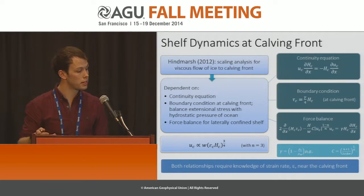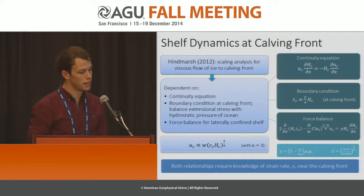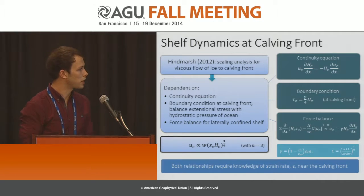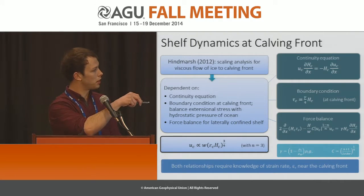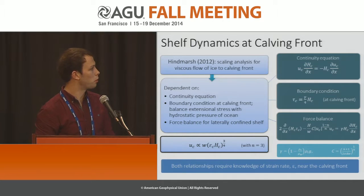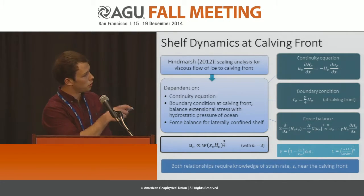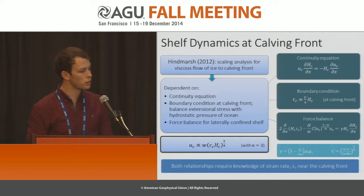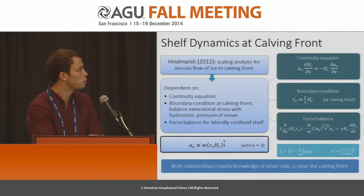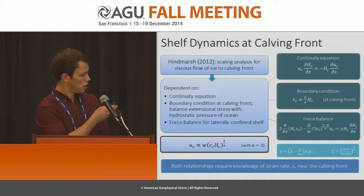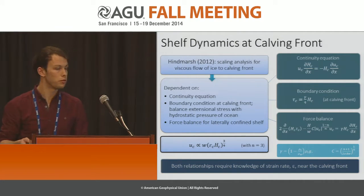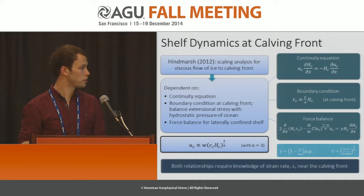Using this scaling analysis and taking n equal to three, we see that there should be a proportionality where the velocity of the calving front is proportional to the width multiplied by epsilon times H to the three quarters. Despite there being a disagreement between these two scaling relationships, we can see that both relationships require knowledge of the strain rate at the calving front.